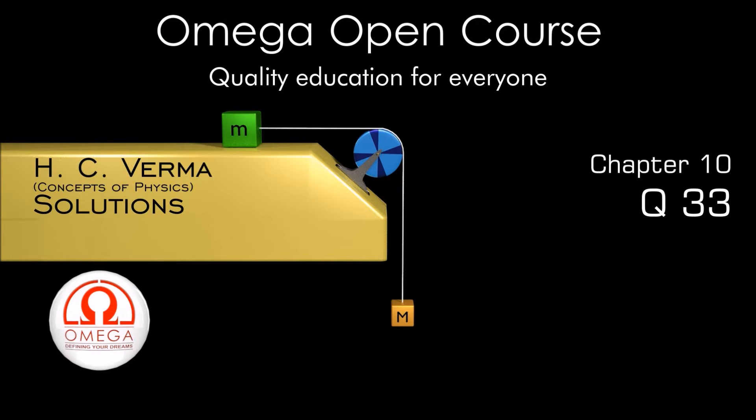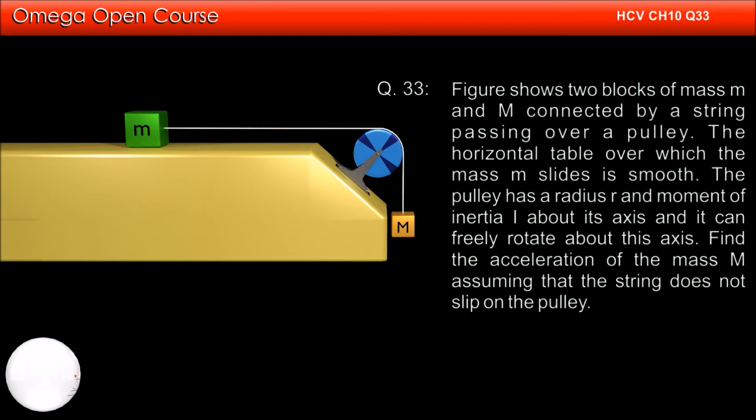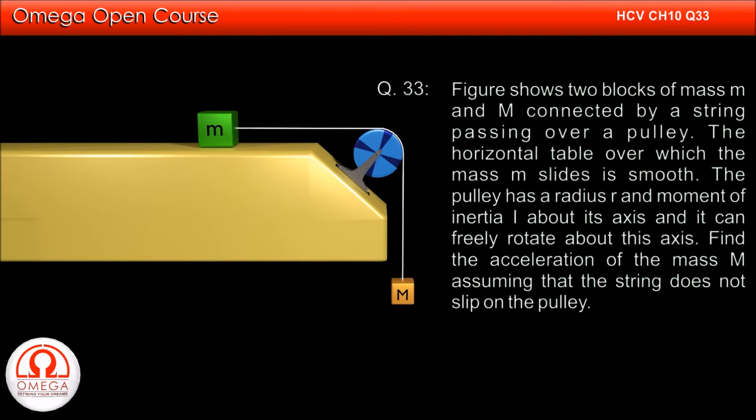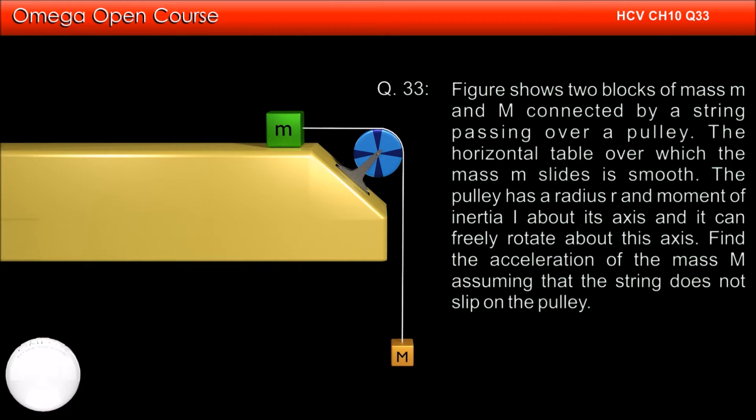H.C. Verma Chapter 10, Question 33: Two blocks of masses m and M are connected by a string passing over a pulley. The horizontal surface over which mass m slides is smooth. The pulley has radius r and moment of inertia I about its axis and can freely rotate about this axis. Find the acceleration of mass M, assuming the string does not slip on the pulley.